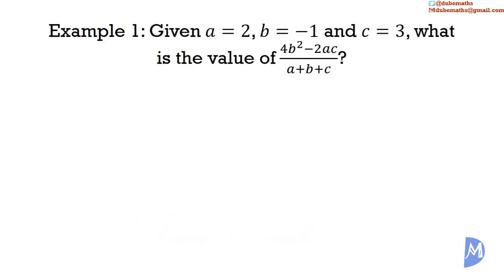Example 1. Given that a is equal to 2, b is equal to negative 1, and c is equal to 3, what is the value of 4b squared minus 2ac, all over a plus b plus c? In this expression, wherever we see a, we substitute 2; wherever we see b, we substitute negative 1; and wherever we see c, we substitute 3.